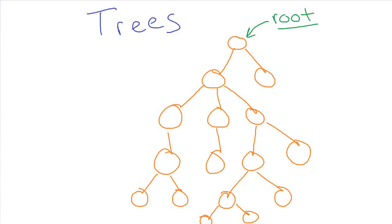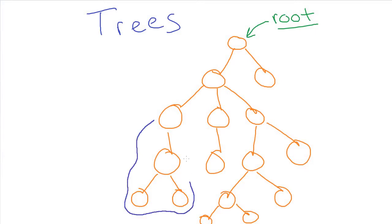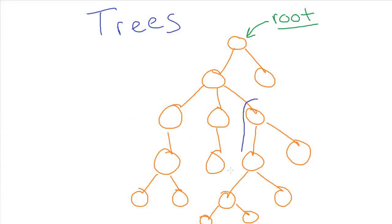Another term that is used sometimes is subtree. A subtree basically refers to the fact that these trees are pretty recursive naturally. Sometimes we can look at a process happening for the whole tree and apply it to a subtree — meaning we can cut off part of the tree and think of it as a tree unto itself. This would be the root node here, and it would have one child and so on. Likewise, we can talk about another subtree over here. So we can pick off a piece of the tree and talk about it as if it itself was a whole tree.